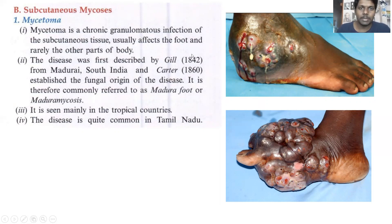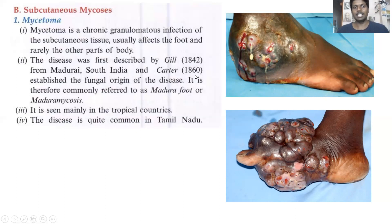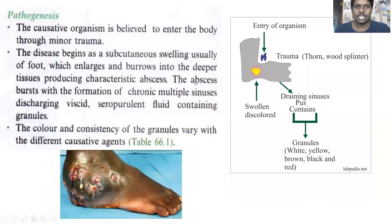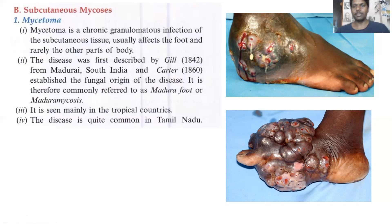This disease was first discovered by Gill in 1842 from Madurai, South India, and by Carter in 1860. Carter established the origin of this disease as being due to a fungus. Let us now see what fungi are responsible for Mycetoma.